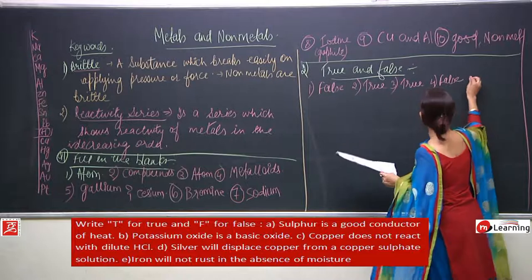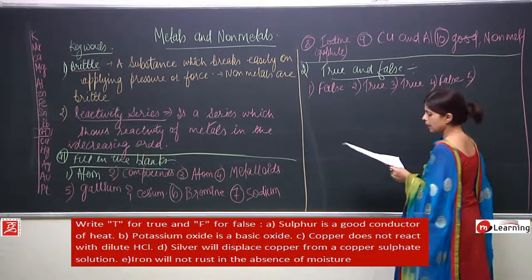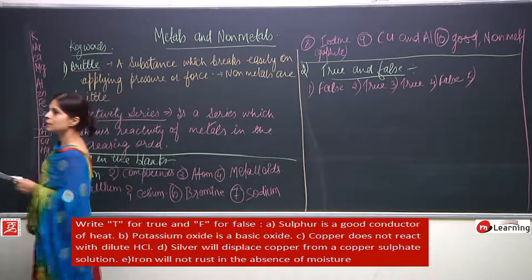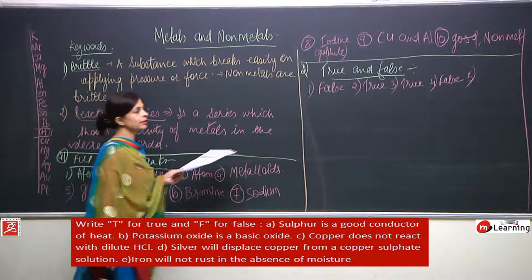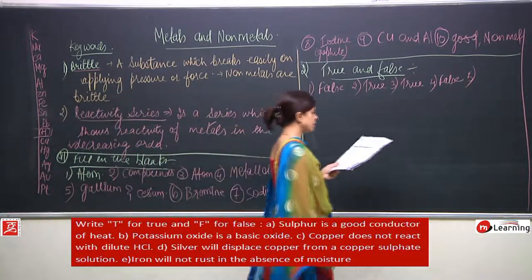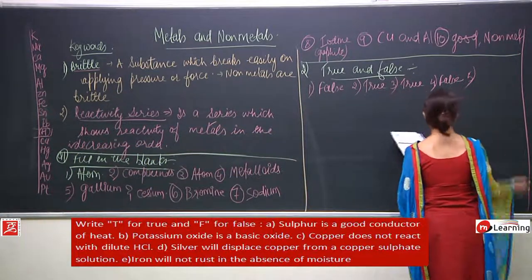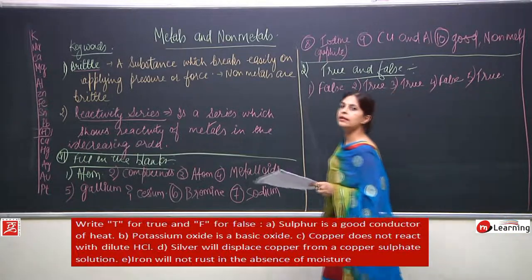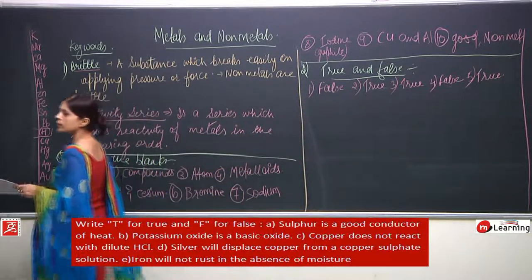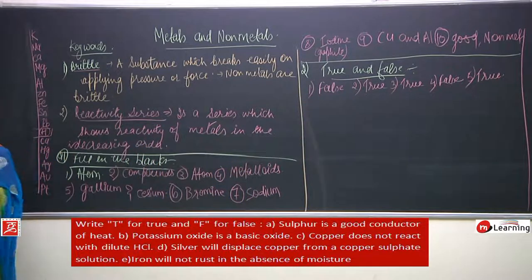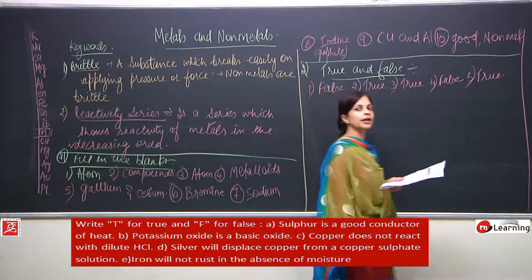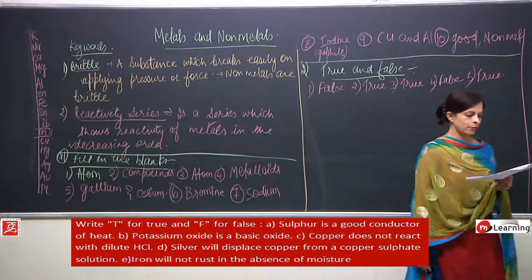Fifth: iron will not rust in the absence of moisture. If we keep iron in dry air, will it rust? We have done the experiment. Iron will not rust — that is true. It would not rust if only dry air is provided, because it also needs moisture. From moisture it reacts with water and from air it reacts with oxygen, and then only iron oxide, i.e., rust, is formed.